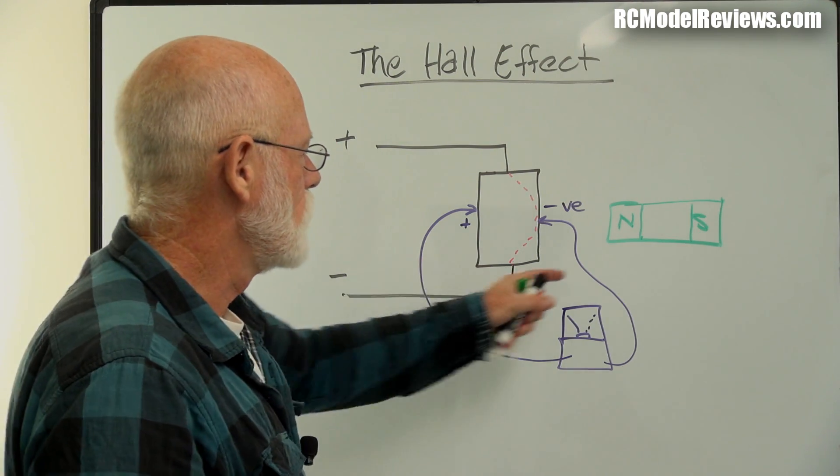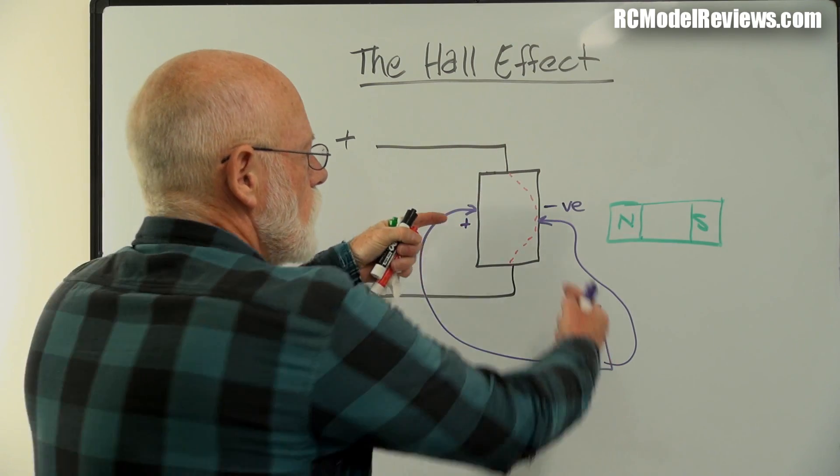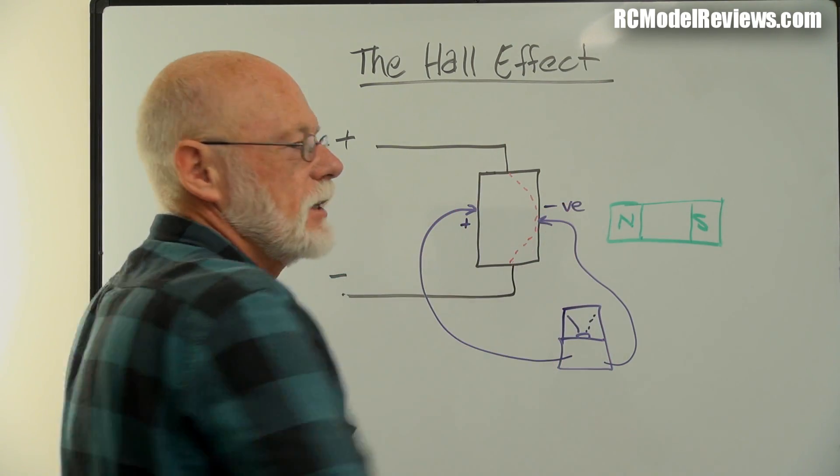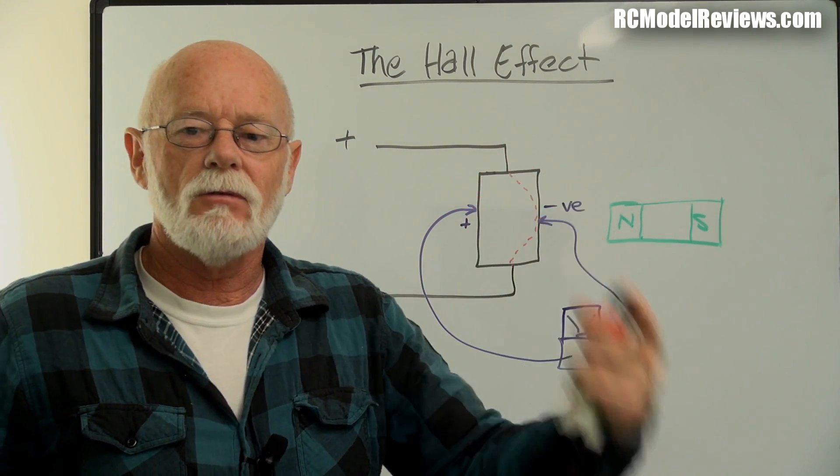Because if we were to turn that magnet around, suddenly the electrons would be repelled. They'd go over this side, so the polarity would change on that piece of conductor. Simple stuff, isn't it? All we're doing is basically using a magnet to attract electrons and then measuring the difference when all the electrons end up on one side. That's a very simple Hall effect.